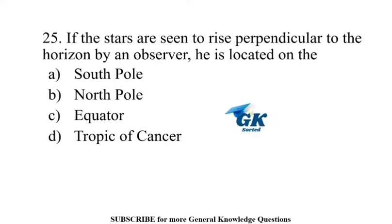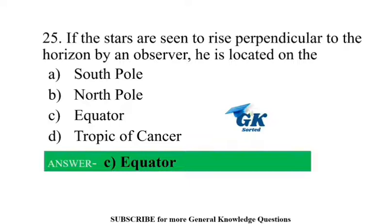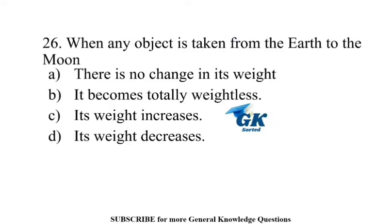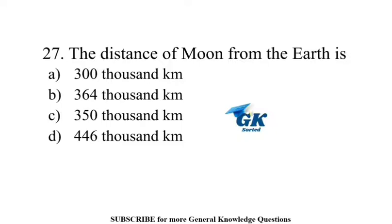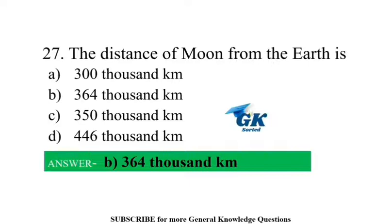If the stars are seen to rise perpendicular to the horizon by an observer, he is located on the equator. When any object is taken from the earth to the moon, its weight decreases. The distance of moon from the earth is 364,000 kilometers.